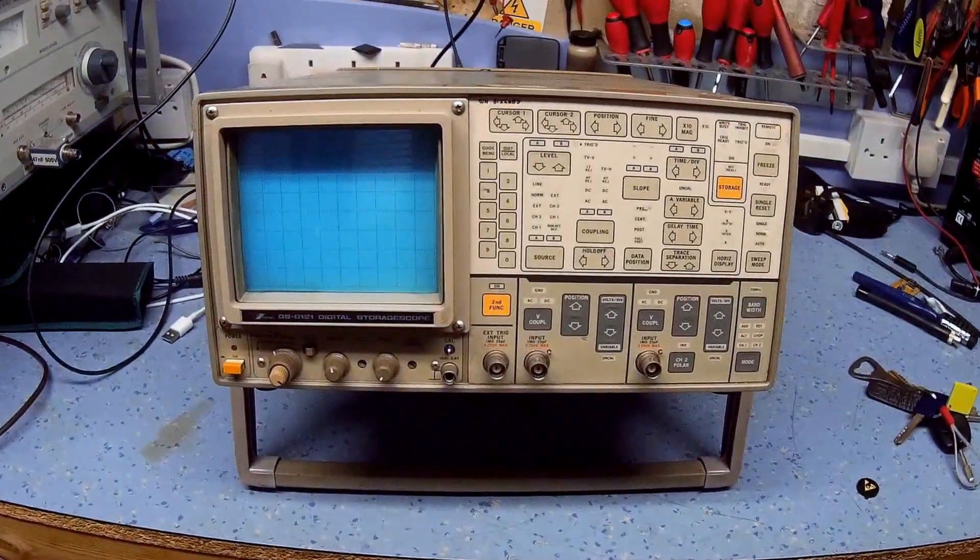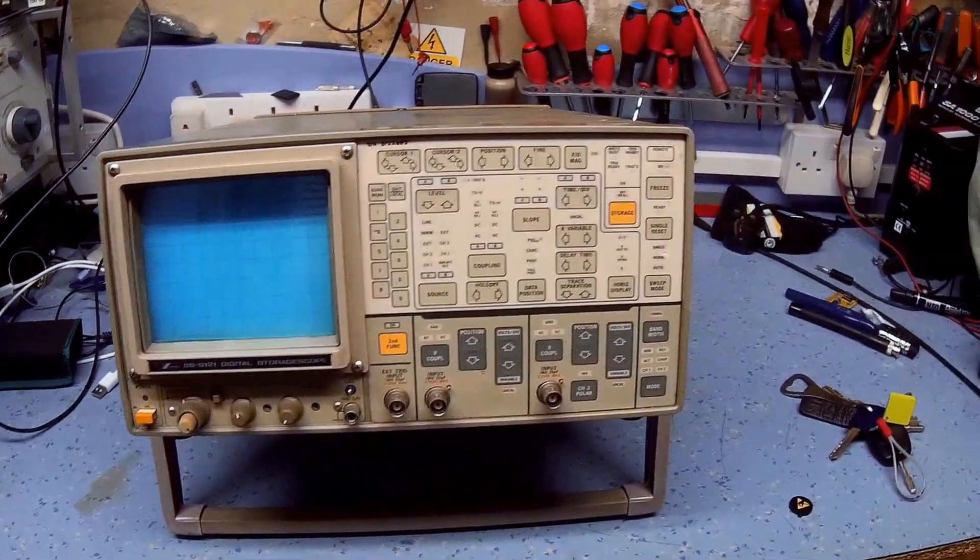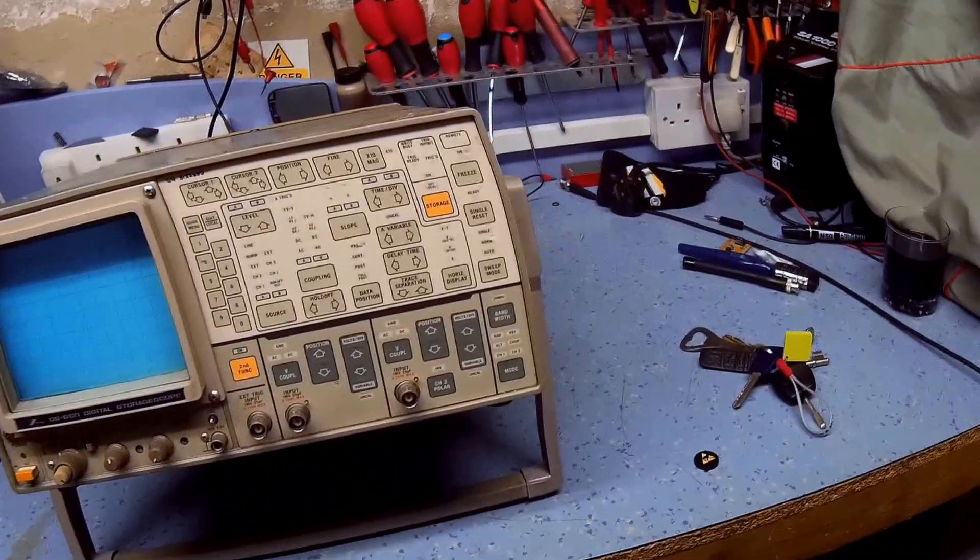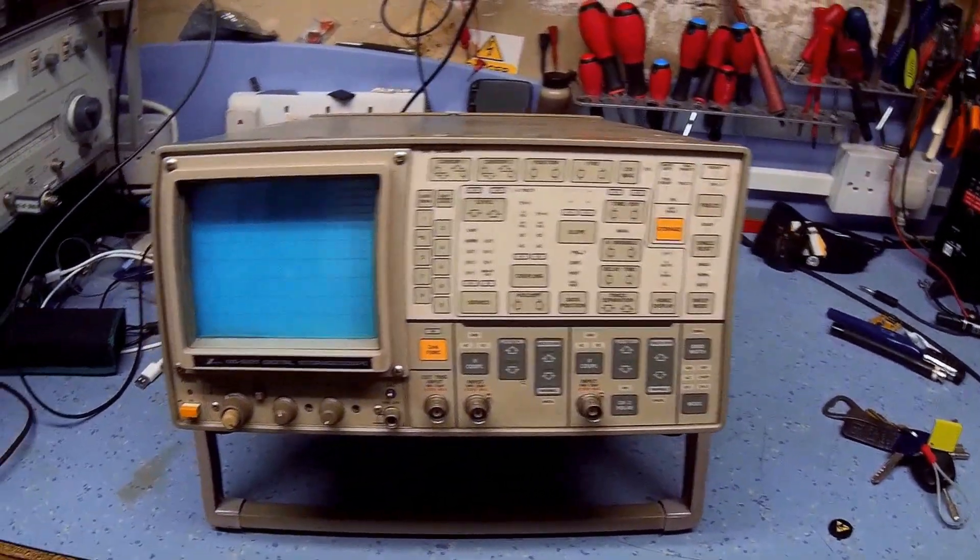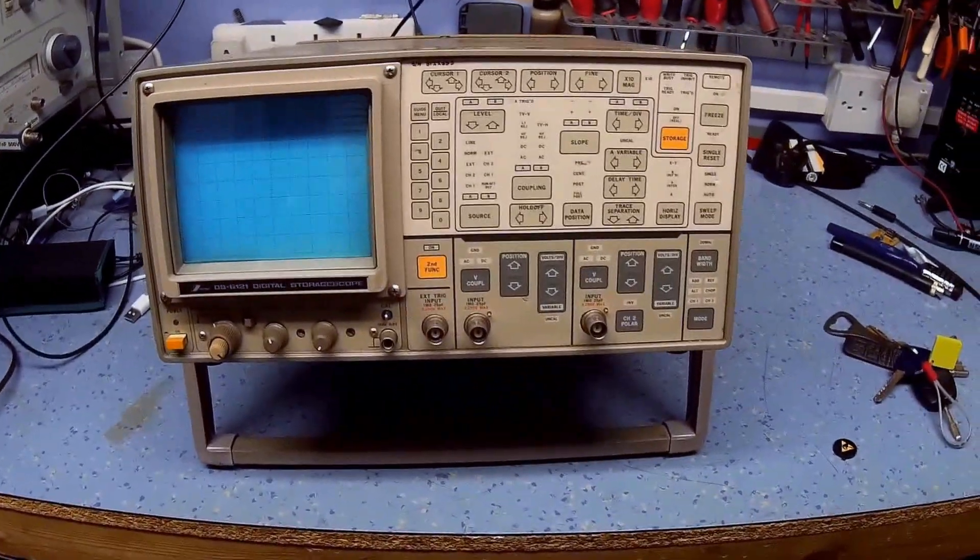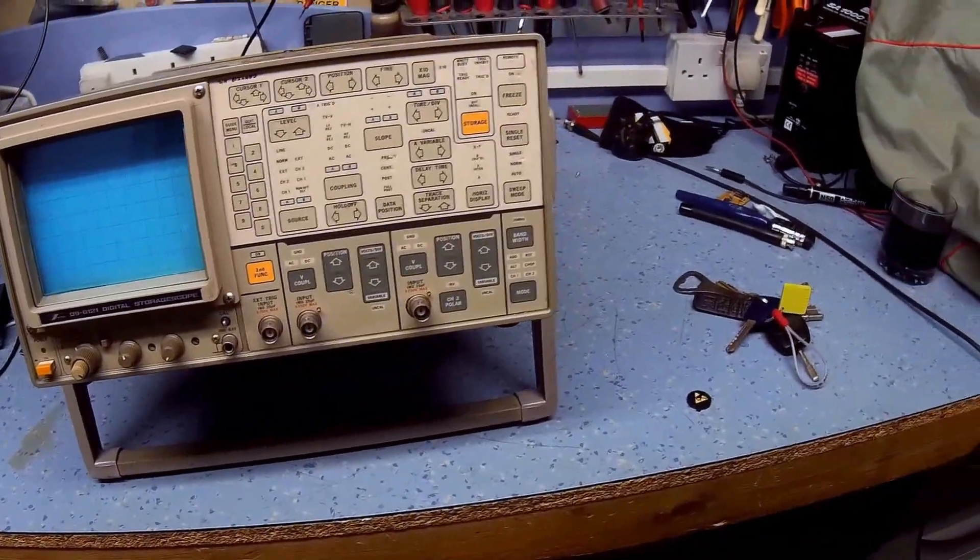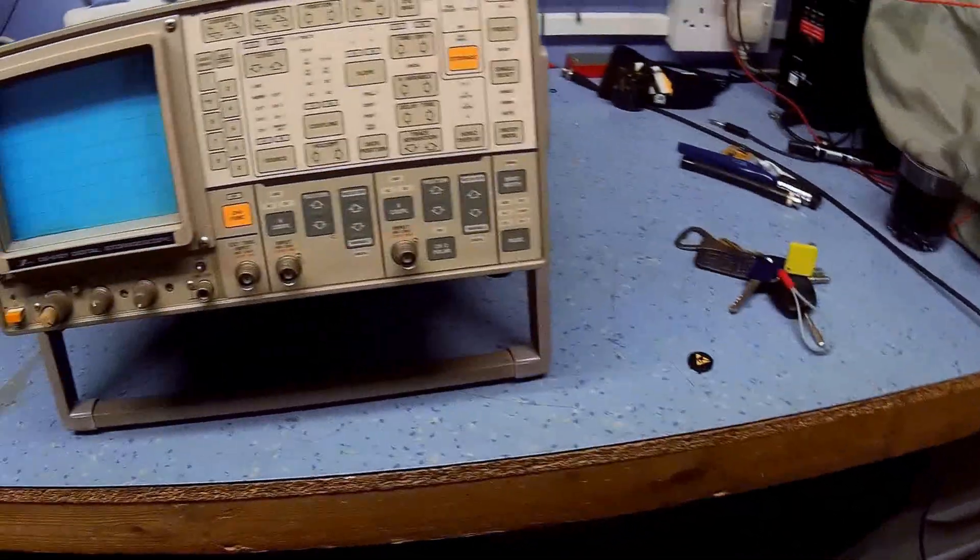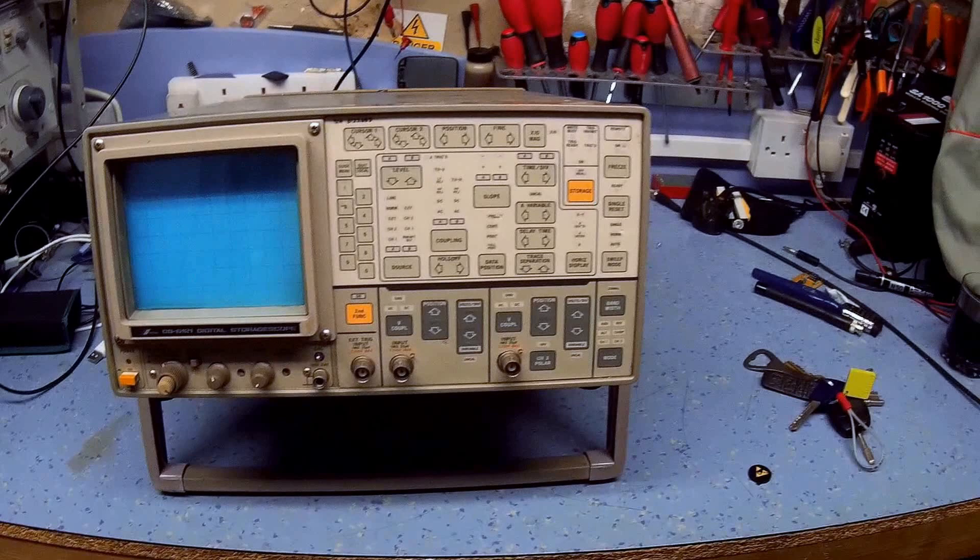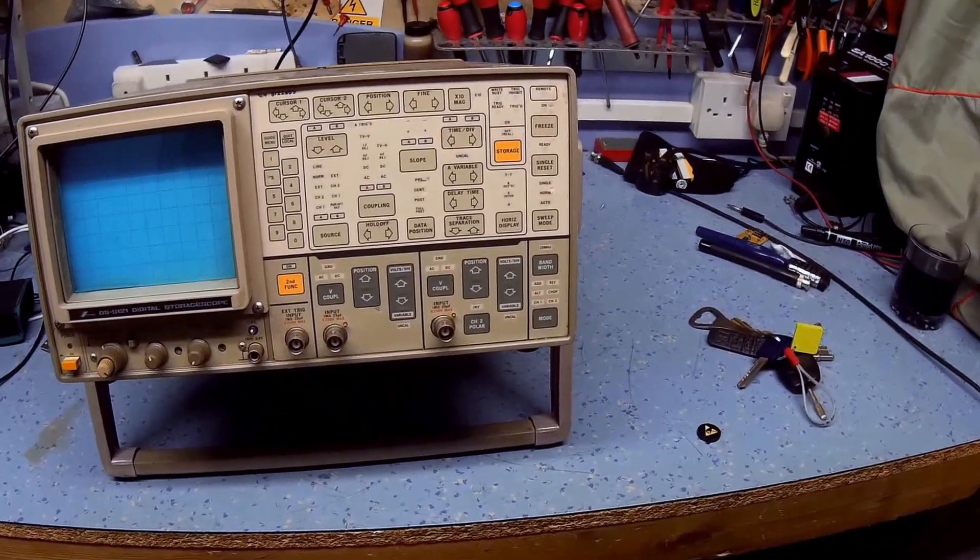This is an IWATSU DS6121 scope, circa 1980. We used to use these to work up to about five or six years ago. I've been working there nearly twenty years now, and I remember working with these scopes back in, certainly in the nineties.